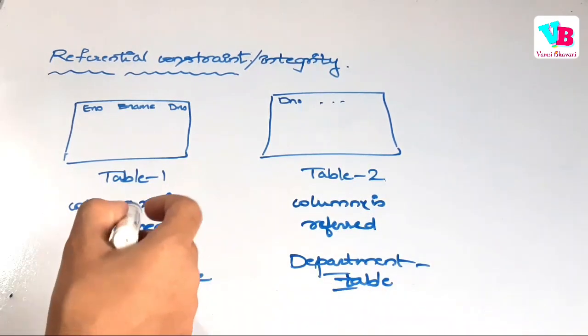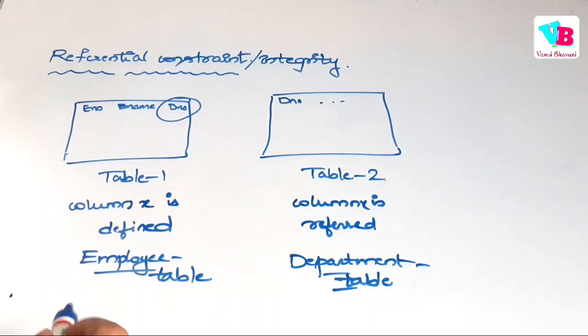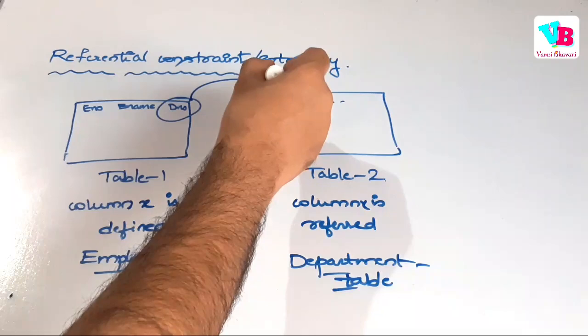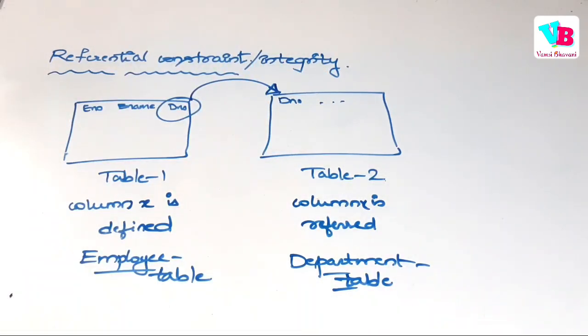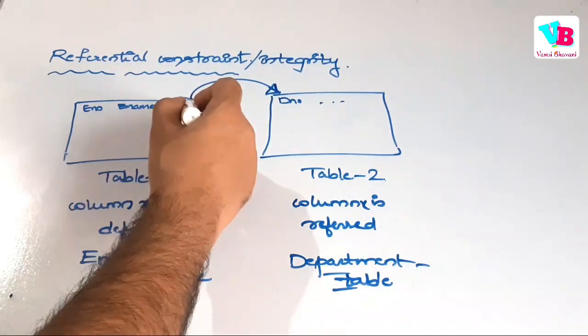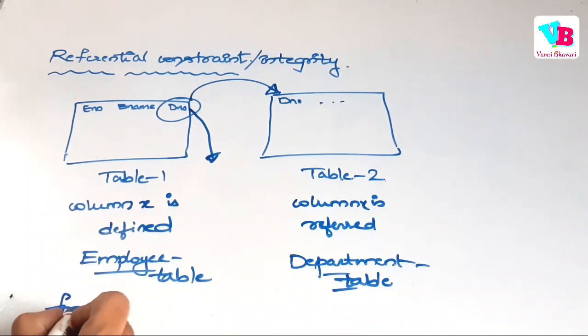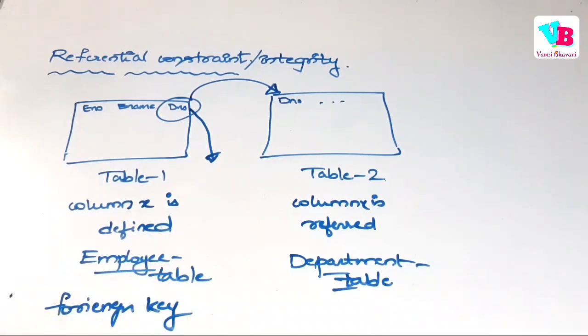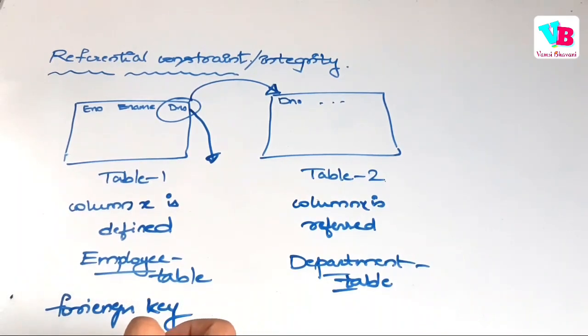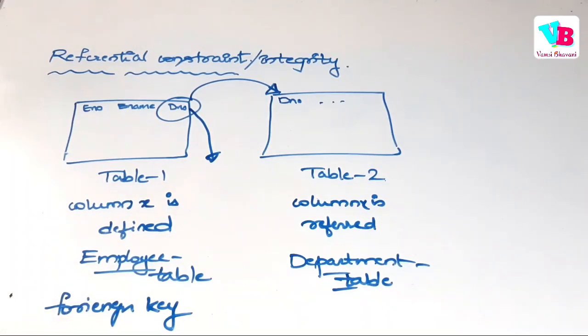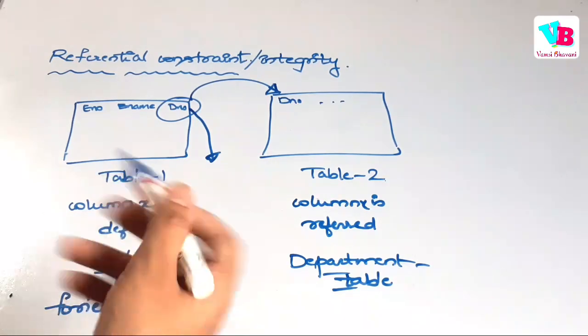The point is, here, this column is defined and that is being referred here. So, basically, the department number column here is a foreign key. What? Foreign key. Got it? Here, if we do department number as foreign key,